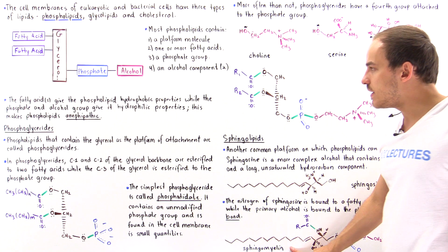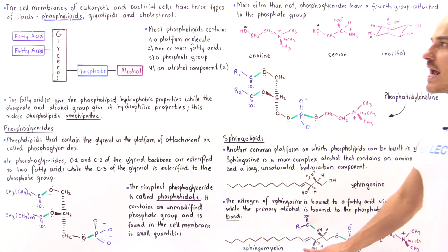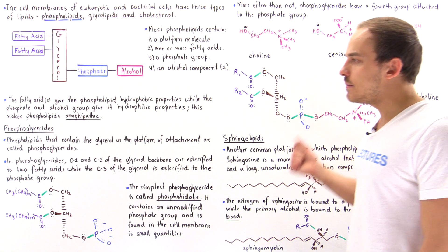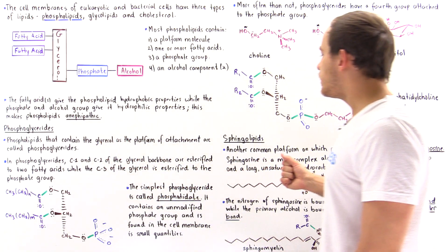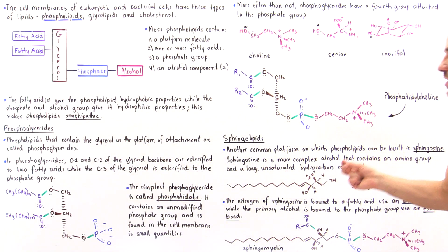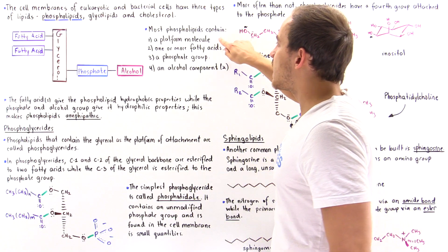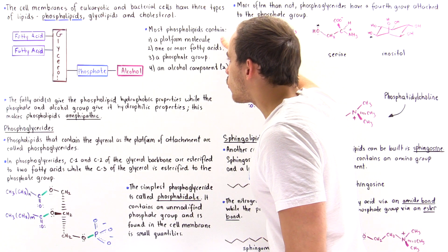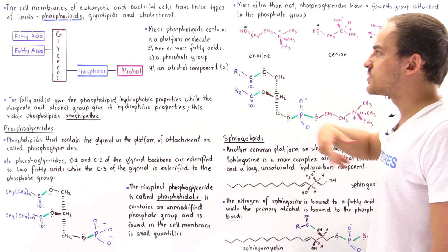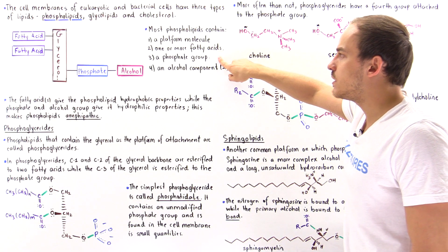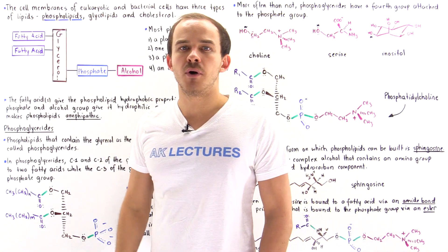We call this sphingomyelin. So we see that we have two types of phospholipids — phosphoglycerides and sphingolipids — and what differentiates them is the type of platform molecule that connects the other components: the fatty acids, the phosphate group, and in most cases, the alcohol component.